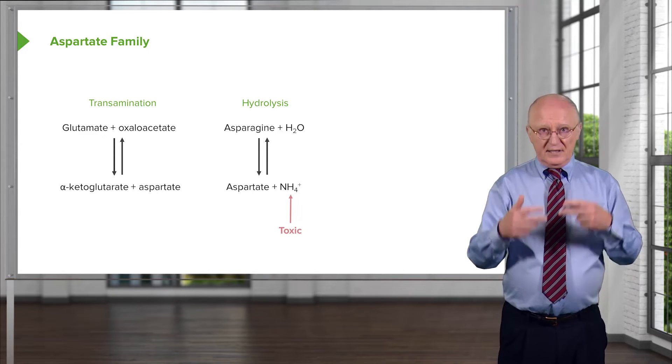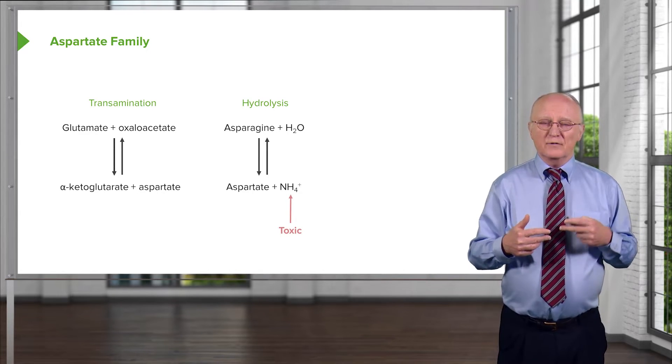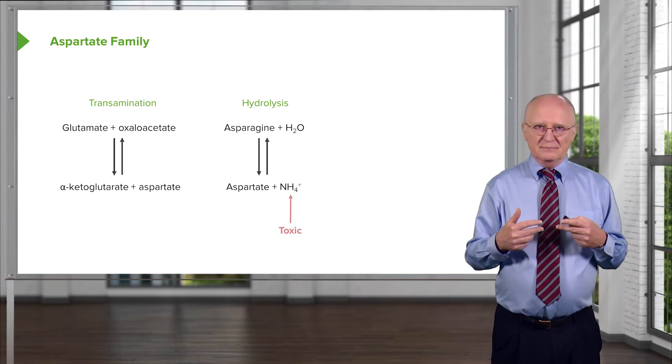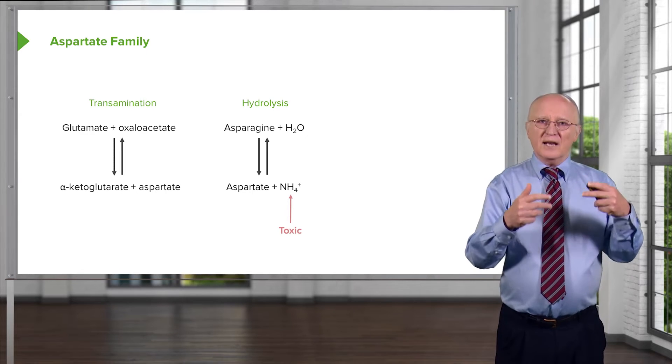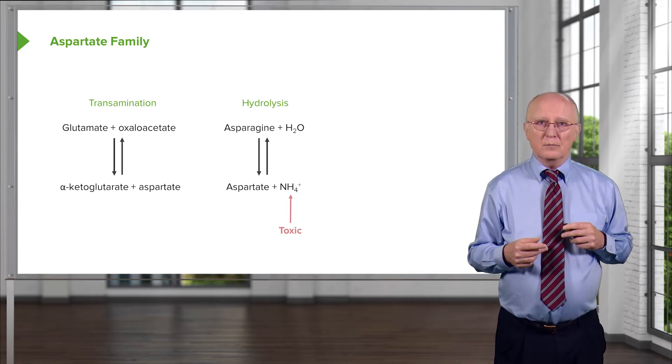Ammonia is a toxic compound. If the cell needs aspartate, they're going to do this reaction. Or if the cell is breaking down asparagine, it's got too much asparagine, it'll do this reaction. But that ammonium ion has to be gobbled up somewhere or it's going to cause a problem.